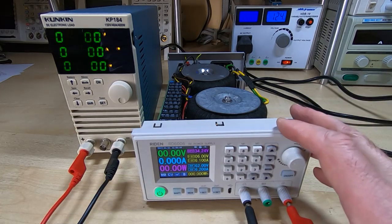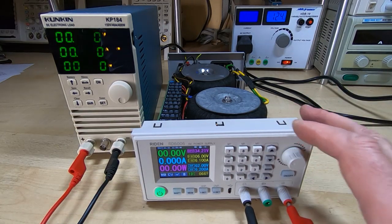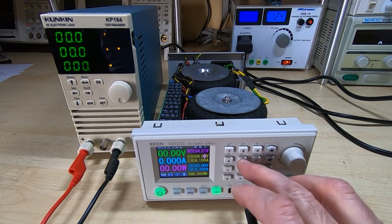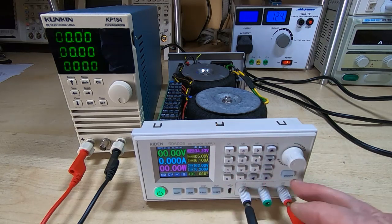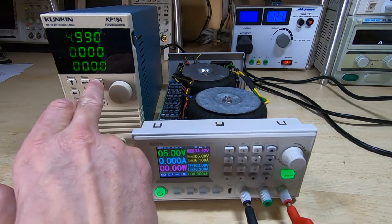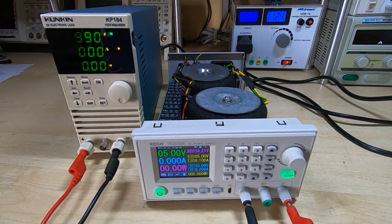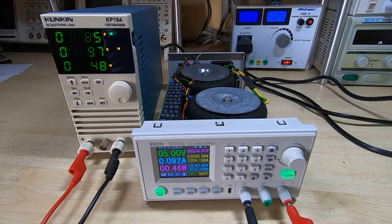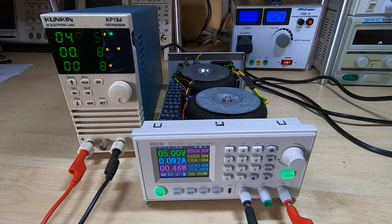We'll now see if the power supply can actually output any power. I'll set it to five volts, enable the output, and turn on the load. We're seeing just under half a watt, which is what we should be seeing.